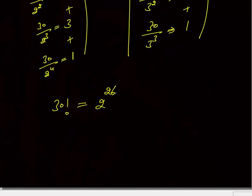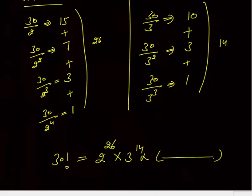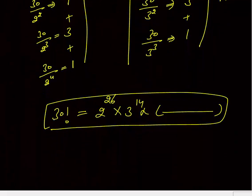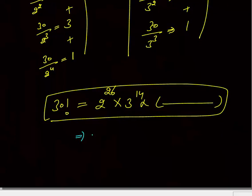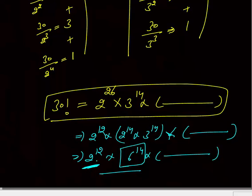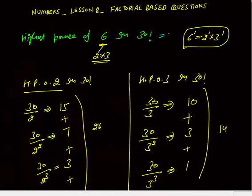So 30 factorial equals 2 to the power 26 into 3 to the power 14 into something else. To count 6's, each 6 needs one 2 and one 3. We have 26 twos and 14 threes. Although we have more 2's, we run out of 3's at 14. So highest power of 6 in 30 factorial is 14 — that is your final answer.